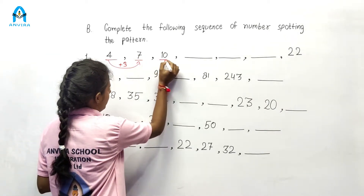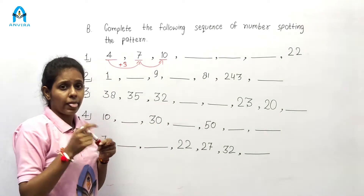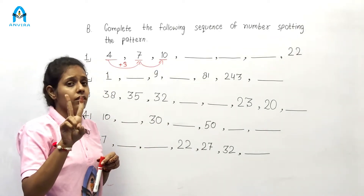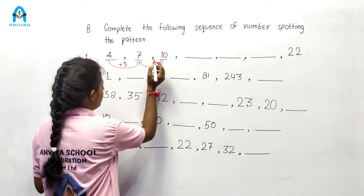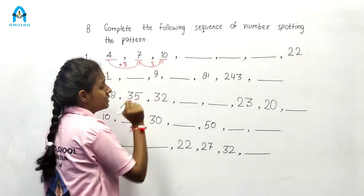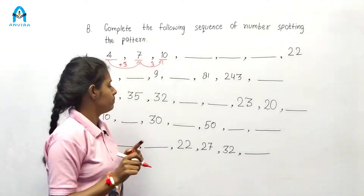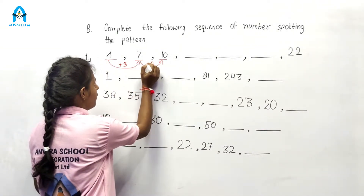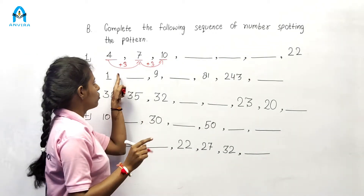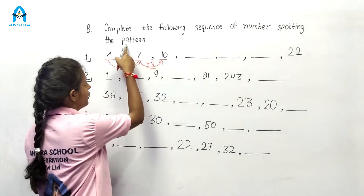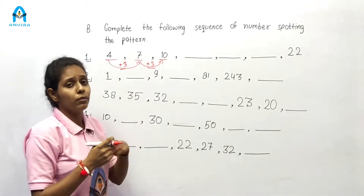Now, find the relation between 7 and 10. Counting: 7, 8, 9, and 10 — the gap is 3. So the gap between 7 and 10 is also number 3. The relation: 7 plus 3 gives us 10. Both gaps are 3 and 3, so the pattern repeats number 3.